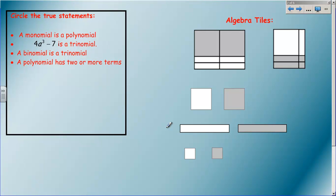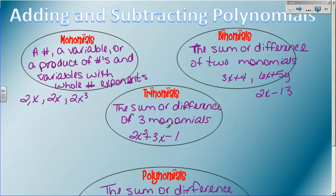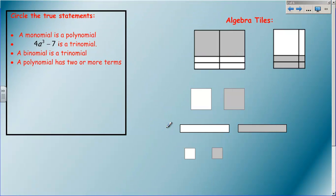Now let's practice. Based on those definitions, we're going to circle the true statements. The first statement: a monomial is a polynomial. This is not true because a monomial doesn't have a sum or difference in it - it's either a number, a variable, or a product, but there's no sum or difference. Next: 4a to the third minus 7 is a trinomial. It can't be a trinomial because it does not have three terms - it only has two. 4a to the third is one monomial, 7 is another, so this is actually a binomial.